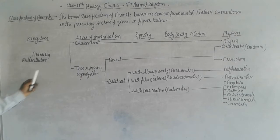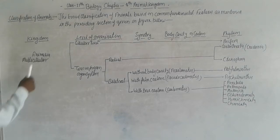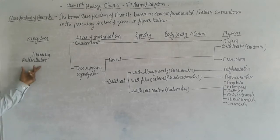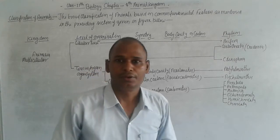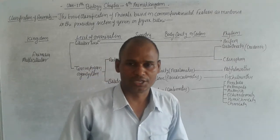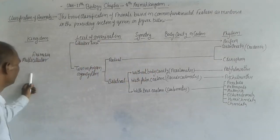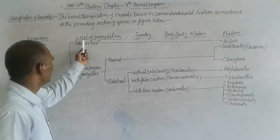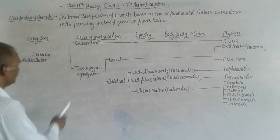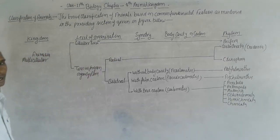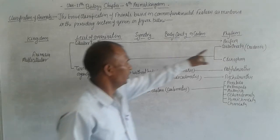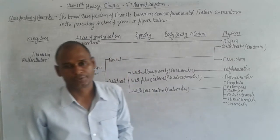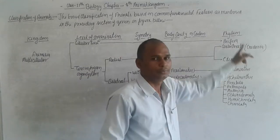So, to classify the animals: Kingdom Animalia. Multicellular means their body is made by more than one cell. The level of organization at the cellular level — like Phylum Porifera.